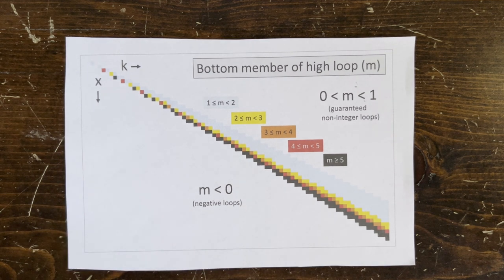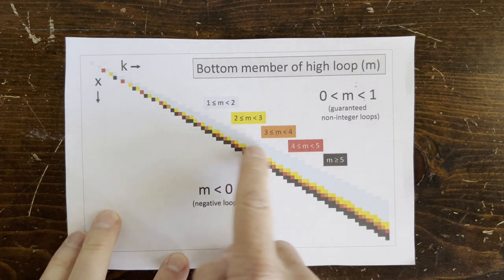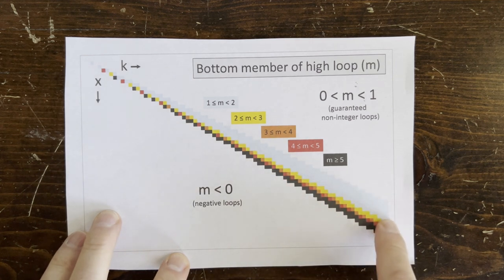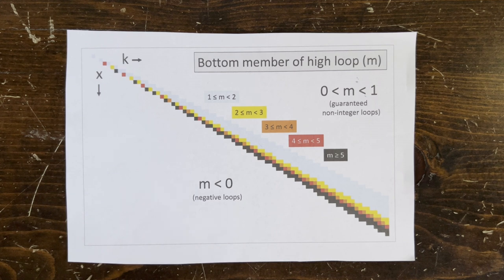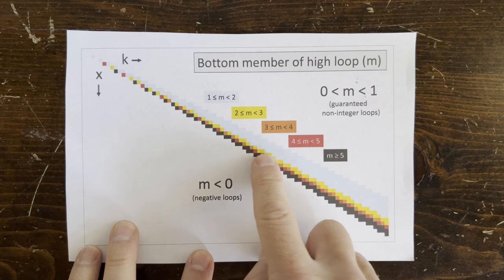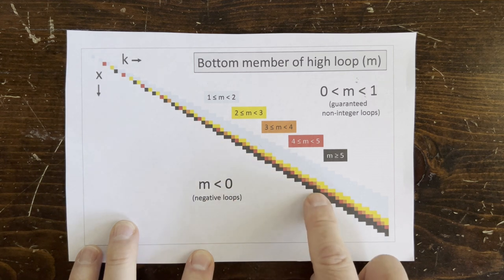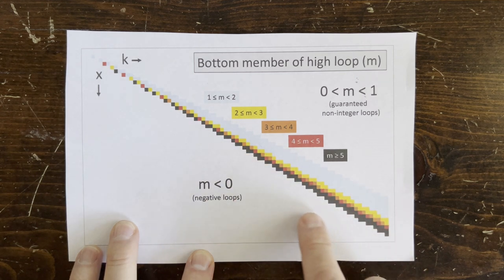Okay, so now we've got a lot more kx pairs where m is greater than 1, as you can see here. And given x, we have to consider k's between x log 3 and 2 times x, or about between 1.58x and 2x.